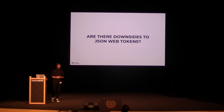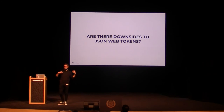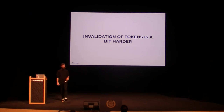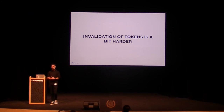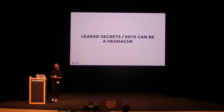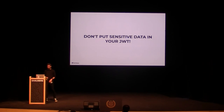Are there some downsides to JSON Web Tokens? One of the downsides is invalidation of tokens — it's a bit harder. If I issue a token valid for a week but want it to be invalid today, it's hard to do since the token contains all the information about whether it's valid inside of it. So you'll have to create a blacklist or whitelist which you check first before checking the actual data in your JSON Web Token. If you leak your secret or private keys, everybody can issue a JSON Web Token that appears valid. And don't put sensitive data in your JSON Web Token since it's just base64.